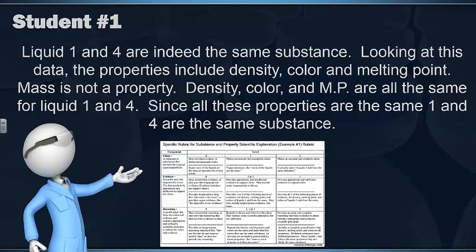So a number 2 for evidence would be provides three of the following pieces of evidence: the density, melting point, and colors of liquids 1 and 4 are the same. Density, color, and melting point are all the same for liquid 1 and 4. The fourth sentence is their evidence. So they would get a 3 for their evidence.